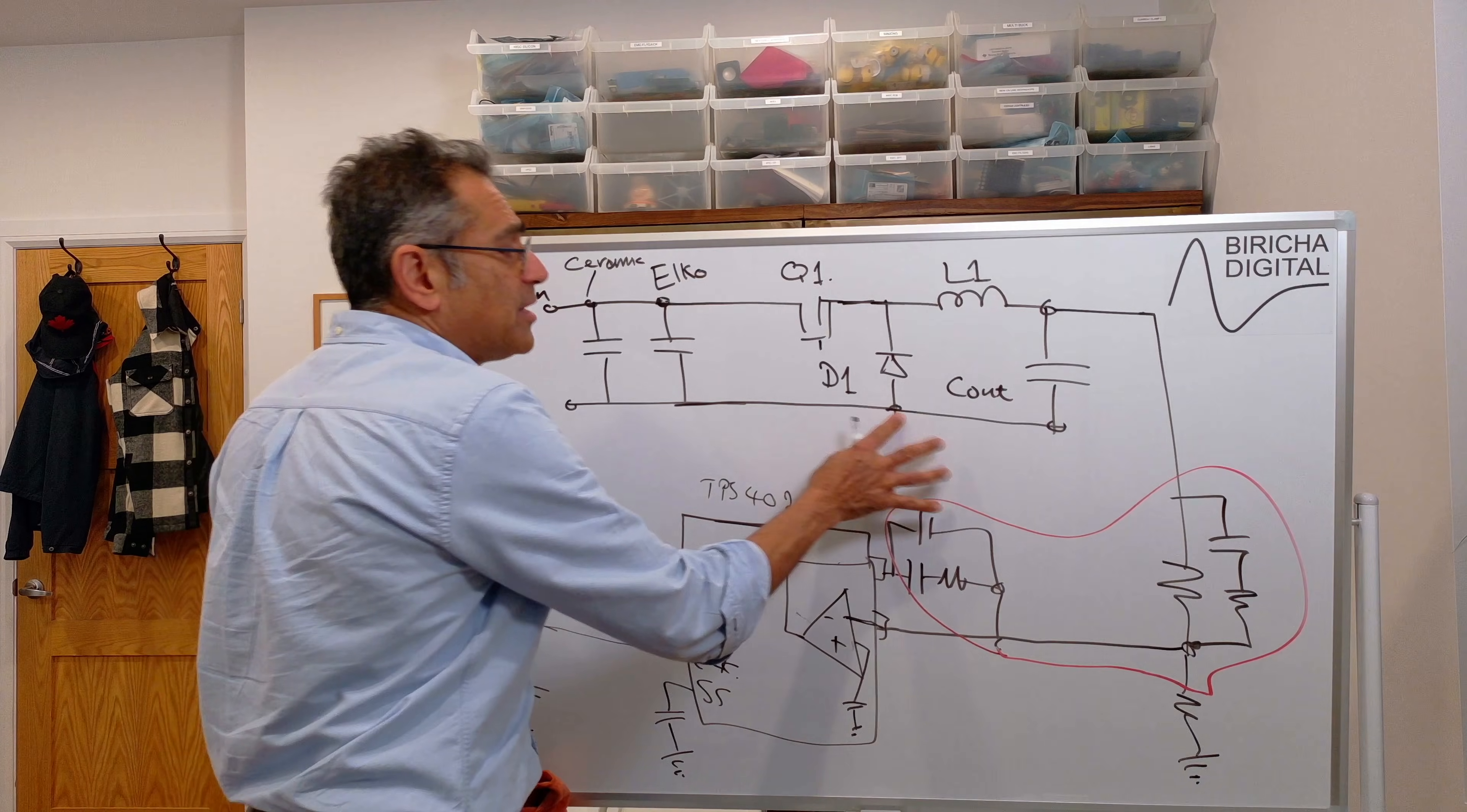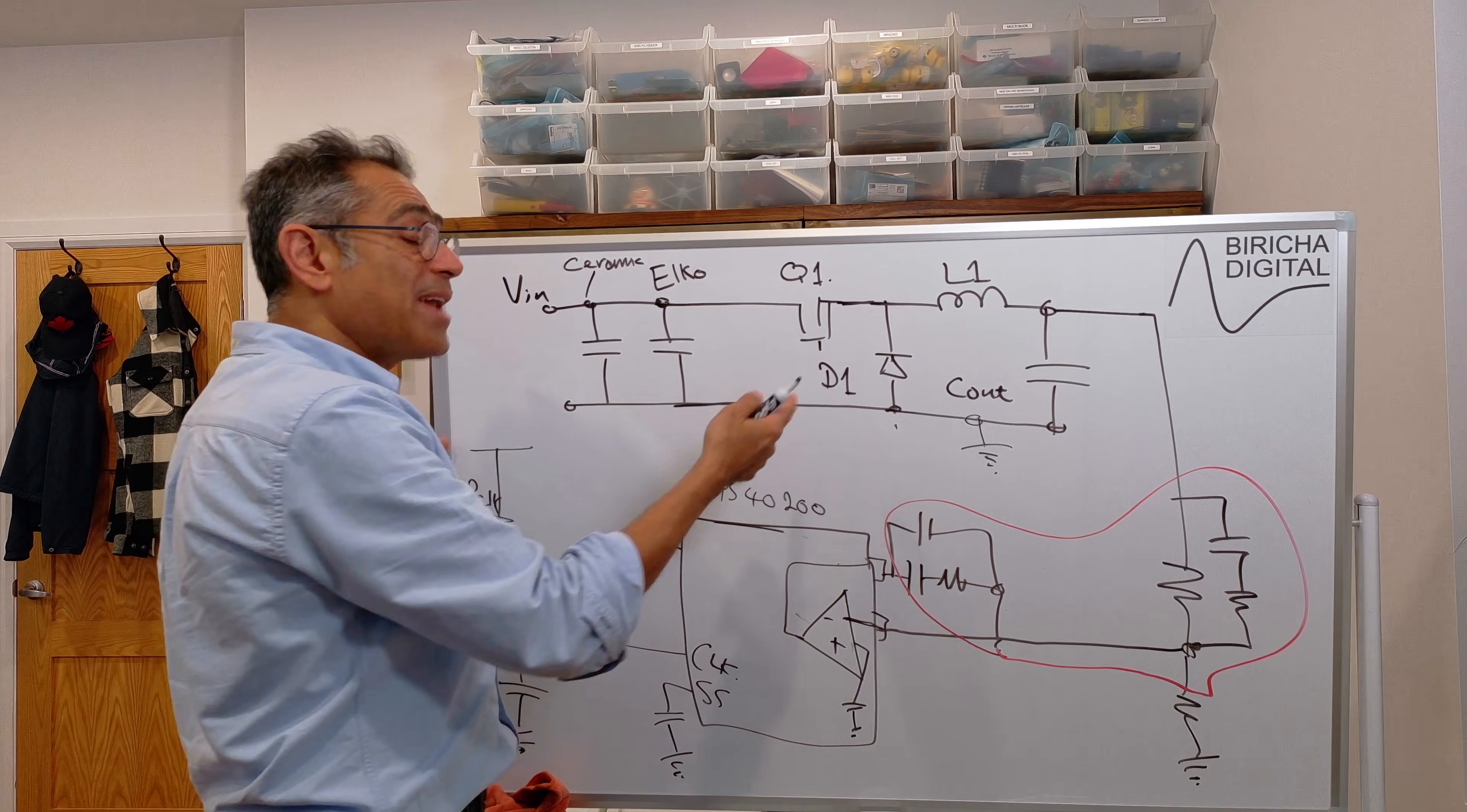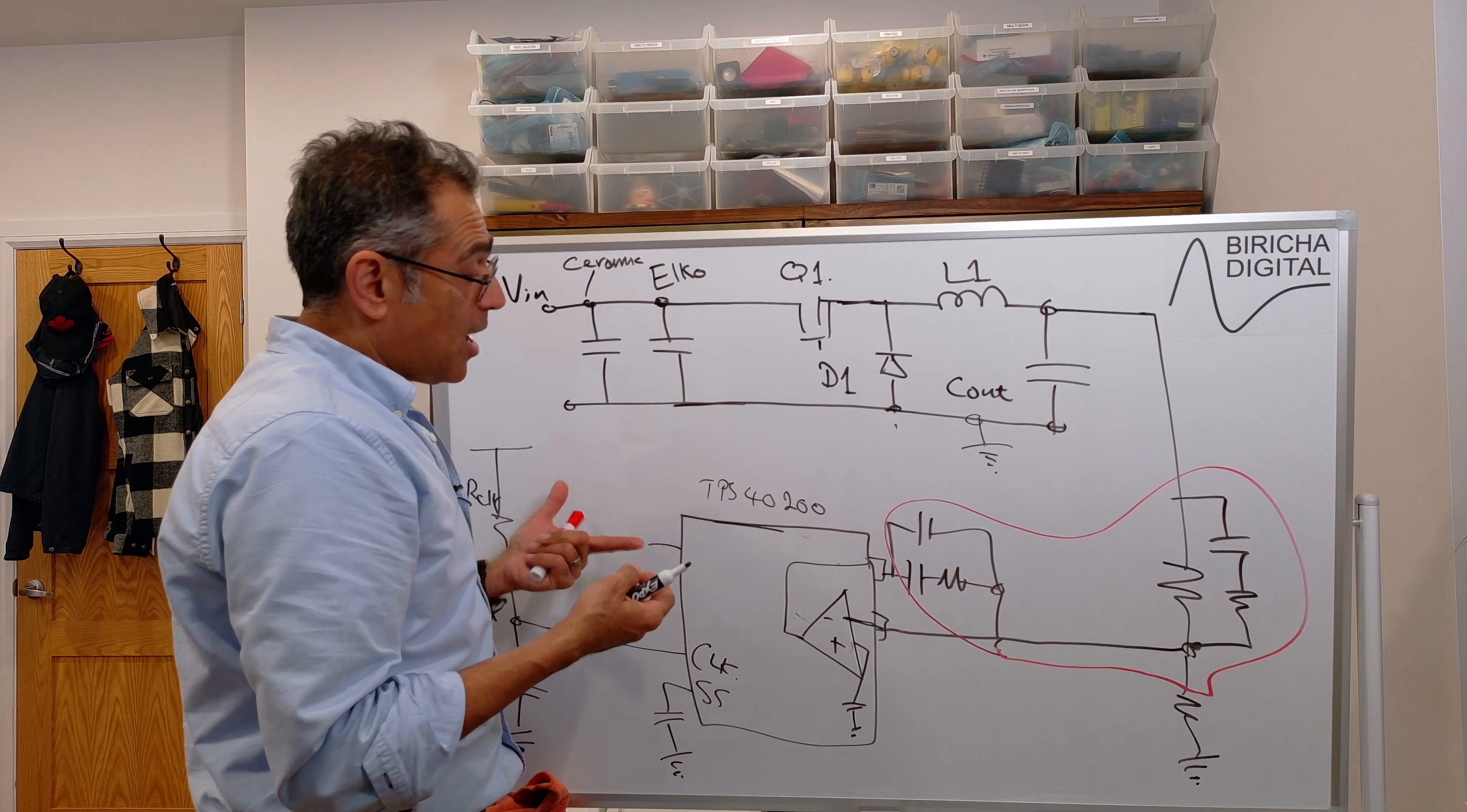And then in addition to this, you obviously have to do current limiting. So there is typically a current sense pin. Now, depending on whether this is a P-type or an N-type, the current sense pin, perhaps with a little bit of capacitance for filtering, will either measure the current across the ground or on the high side. And that is just to trip our power supply.